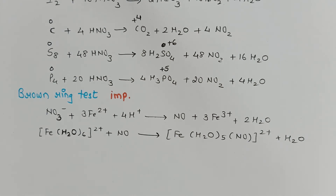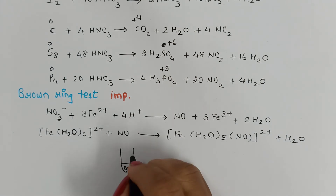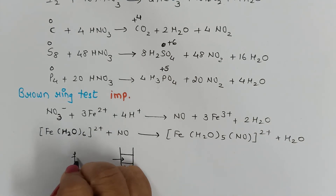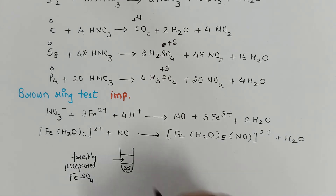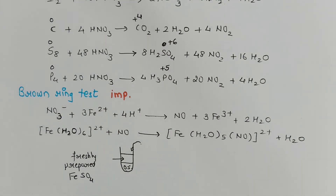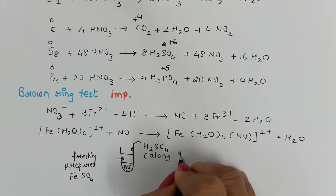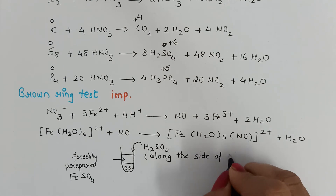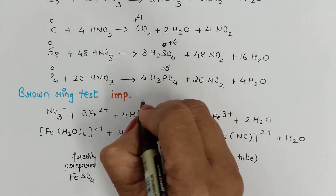Nitric acid also oxidizes phosphorus to phosphoric acid (H3PO4), where phosphorus goes from 0 to +5 oxidation state. Now, you are all familiar with the brown ring test. In this test, we make an aqueous solution of the given salt and add freshly prepared FeSO4 to it, then add concentrated H2SO4 along the side of the test tube.